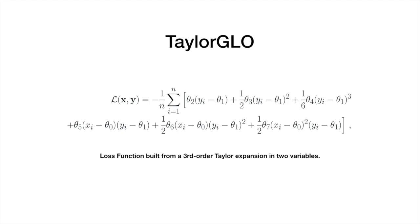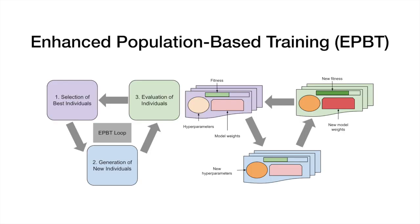This led to the development of TaylorGLO, a novel evolvable parameterization for loss functions that's based on multivariate Taylor expansions. ePBT runs in a three-stage loop. In stage 1, promising individuals are selected using a heuristic. In stage 2, new individuals with updated hyperparameters are created, but the weights and fitness are inherited.